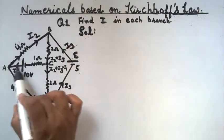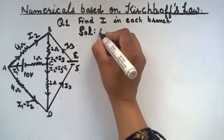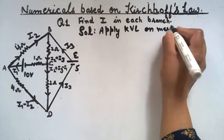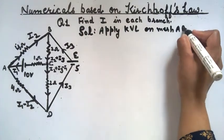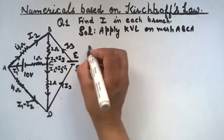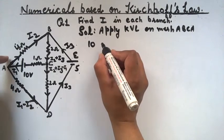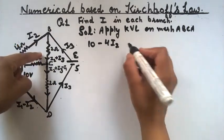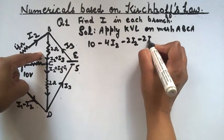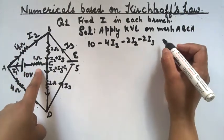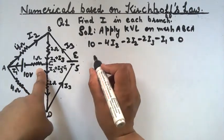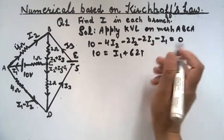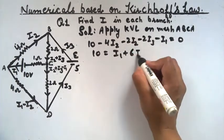Consider mesh ABCA and apply KVL. We see a rise in potential, so it is positive. Then: minus 4I2, minus 2(I2 + I3), minus 2I3, and minus I1, all equal to zero. On further solving, we get: 10 equals I1 plus 6I2 plus 2I3. Give this equation number 1.